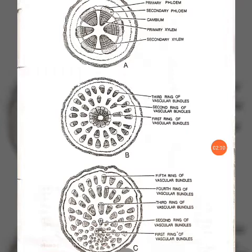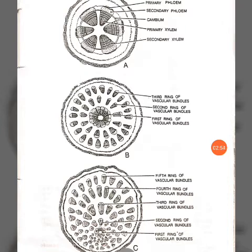The vascular cambium cuts secondary xylem towards the inner side and secondary phloem towards the outer side. The interfascicular cambium cuts the parenchymatous medullary rays - the spaces between the six vascular bundles. So the medullary rays are cut by the interfascicular cambium.